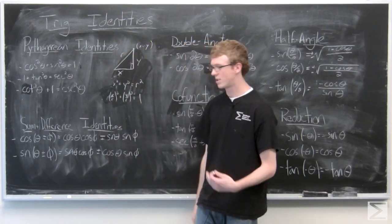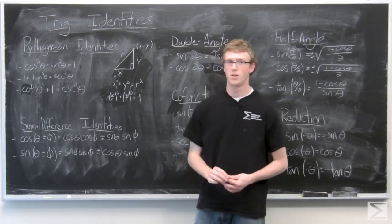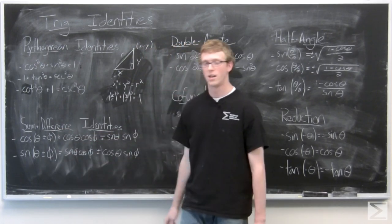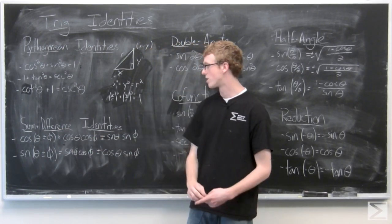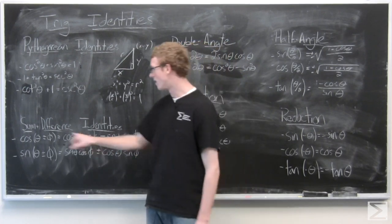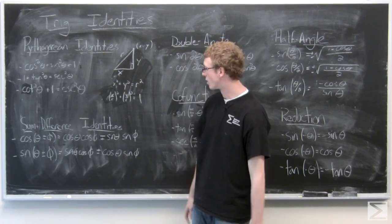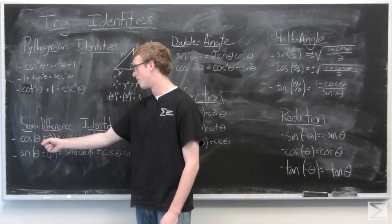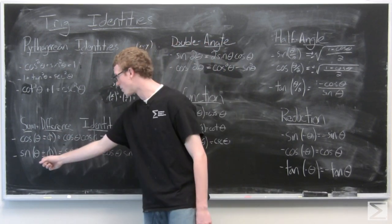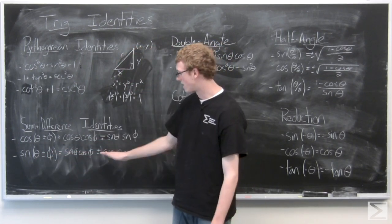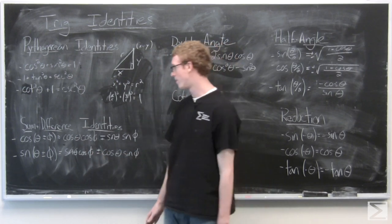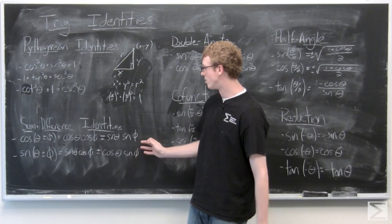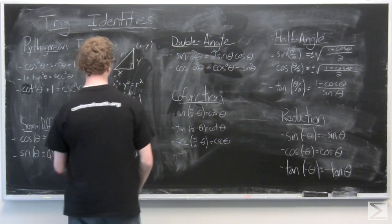Now we're going to look at the sum and difference identities. The plus and minus signs are not there to confuse you — just make sure you follow the correct convention. For cosine of (θ ± φ), the expanded version is cosine θ cosine φ ∓ sine θ sine φ. For sine of (θ ± φ), the signs stay the same, so it's sine θ cosine φ ± cosine θ sine φ. That identity is normally really useful in proving other identities.